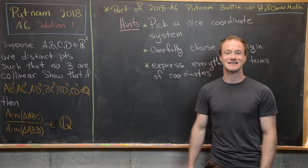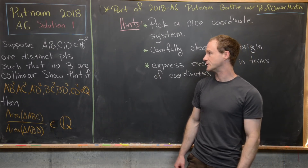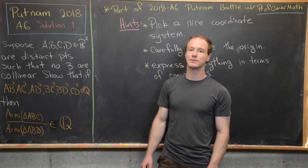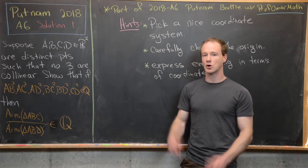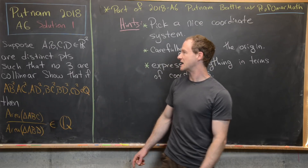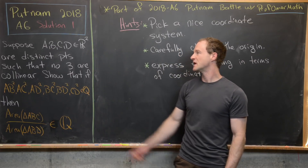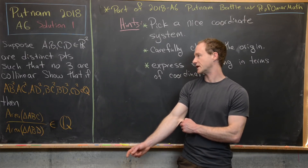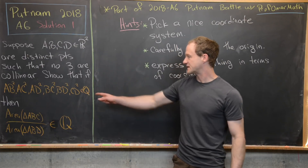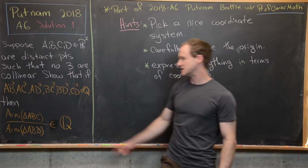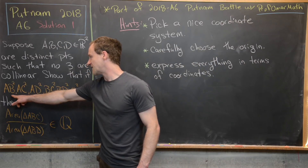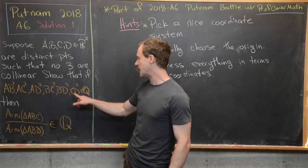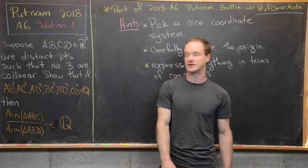Let's look at the statement of the problem. Suppose that A, B, C, and D are in the Euclidean plane — we'll put this into a coordinate system, so in R². They are distinct points such that no three are collinear. Show that if the square of all of these distances — AB², AC², AD², BC², BD², and CD² — are all rational numbers...